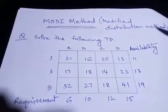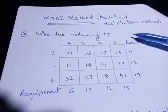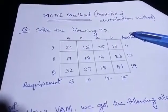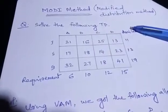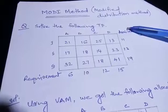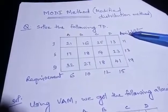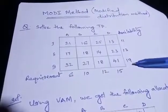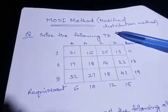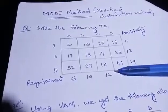Good morning dear students. Today we are going to learn MODI method, that is Modified Distribution Method. Last class we have seen how to formulate a transportation problem and how to solve it using Northwest Corner Method, Least Cost Method, and Vogel's Approximation Method. Using these three methods you get the basic feasible solution, and from that you have to find the optimal solution. The method used for finding the optimal solution is MODI method.